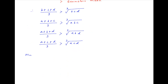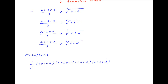Now, multiplying these four inequalities, we get on the left-hand side: (1/3)^4 times (b + c + d)(a + b + c)(a + b + d)(a + c + d). And this is greater than, on the right-hand side, the cube root of bcd times abc times abd times acd.